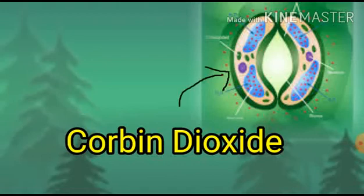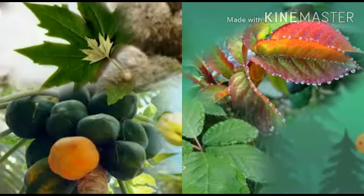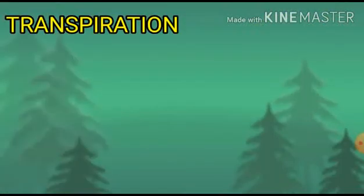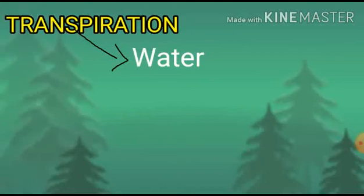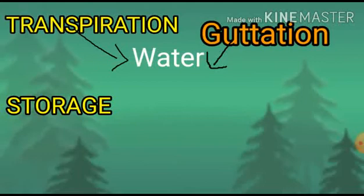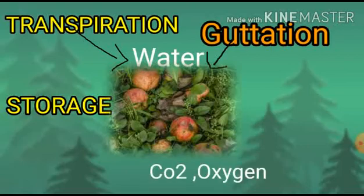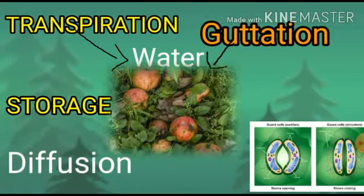Plants excrete in different ways even though they lack dedicated organs for it. Through transpiration, excess water is eliminated. Through guttation, some plants eliminate excess water from their body. Almost all plants store metabolic waste in different parts, and when those parts fall off, waste is automatically removed. Some metabolic waste such as carbon dioxide and oxygen diffuses out through stomata and lenticels.